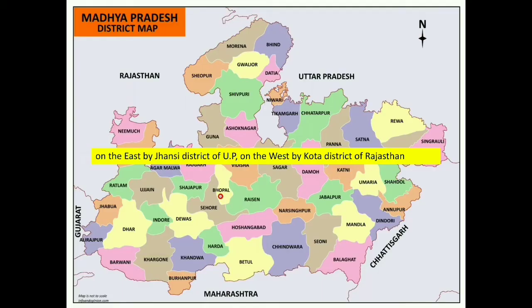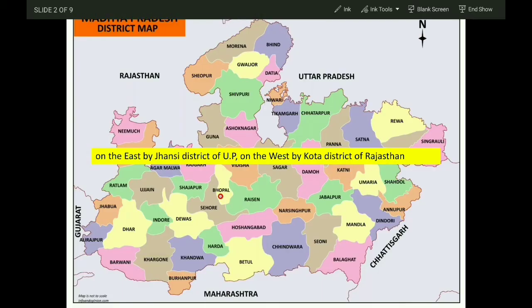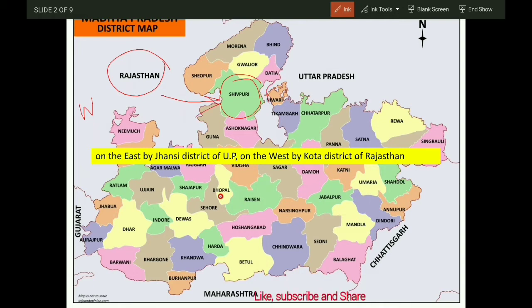Moving on to the map of Madhya Pradesh — we will see where Shivpuri is located. This is Shivpuri, in Madhya Pradesh's neck-type area. On the west side is Rajasthan, and on the east side is Uttar Pradesh.